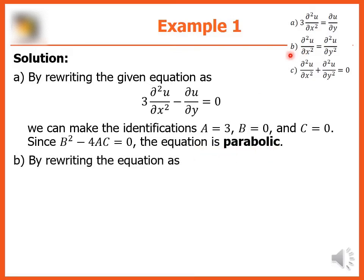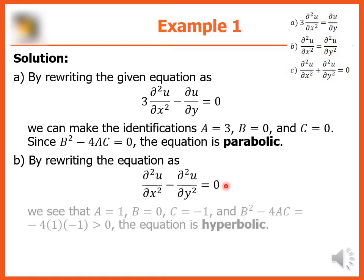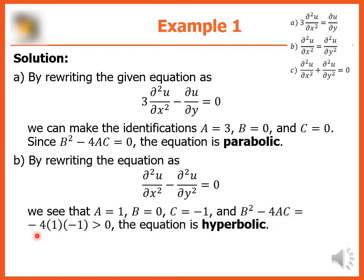For letter b, we rewrite the equation and make the identifications: a is equal to one, b is zero, and c is negative one. Since b squared minus 4ac equals negative four times one times negative one, which is four — greater than zero — therefore the equation is hyperbolic.